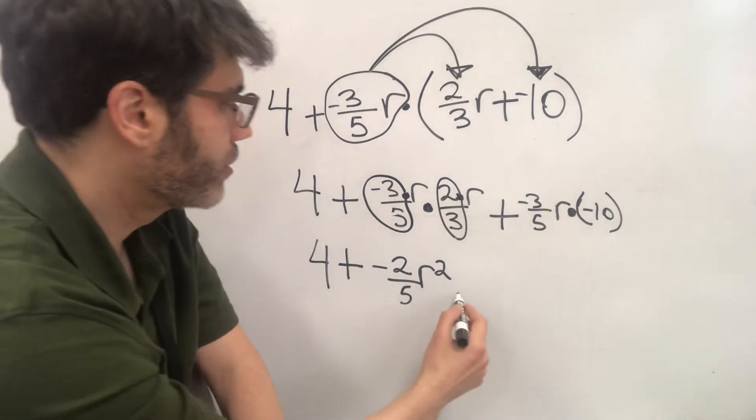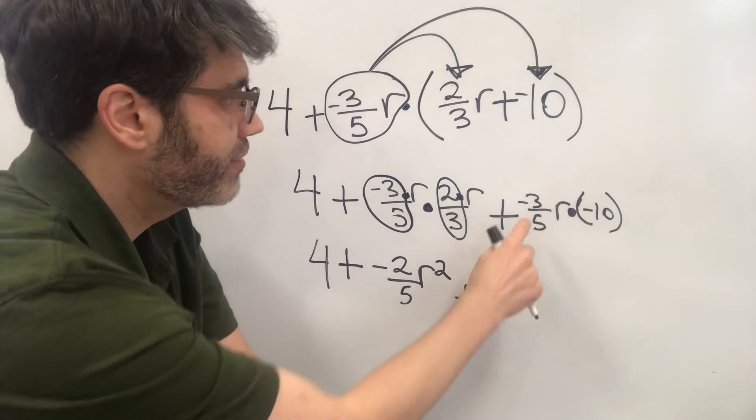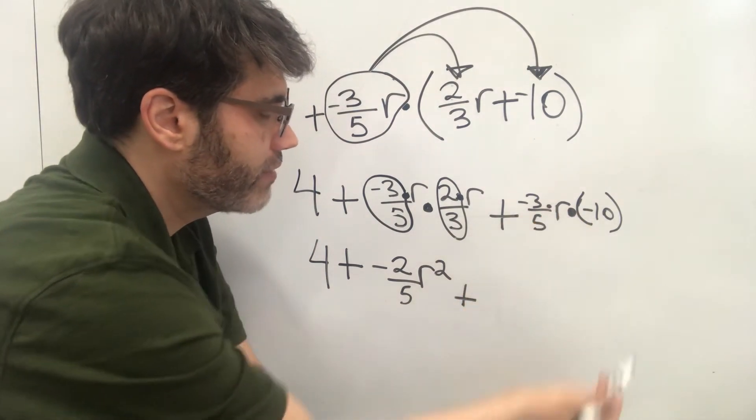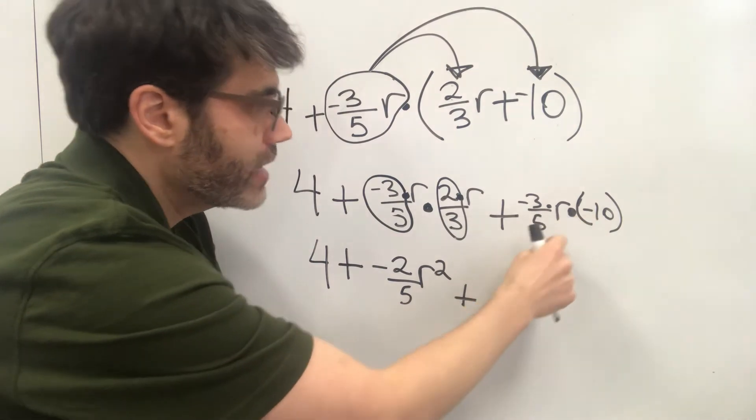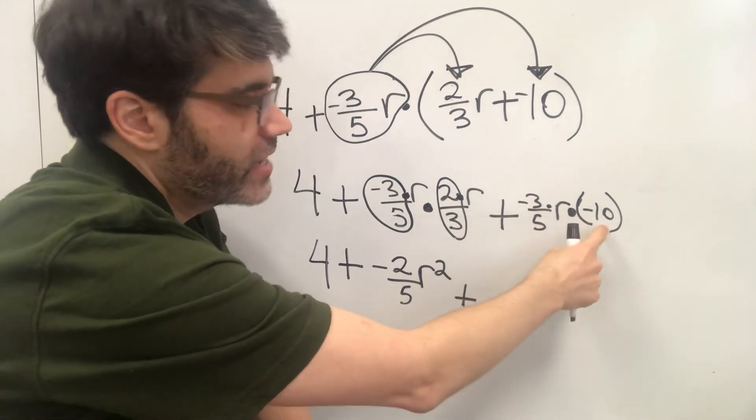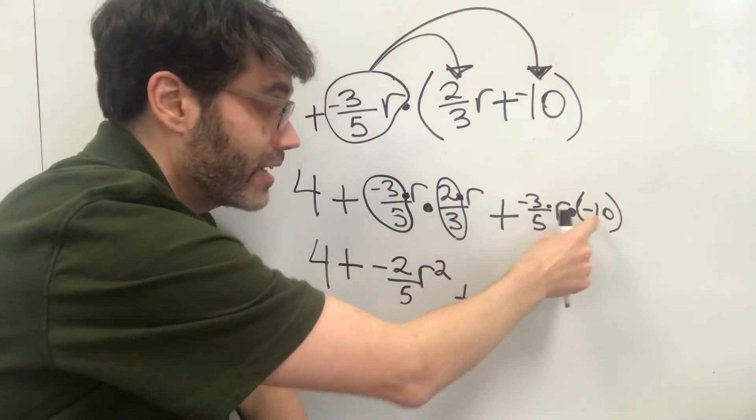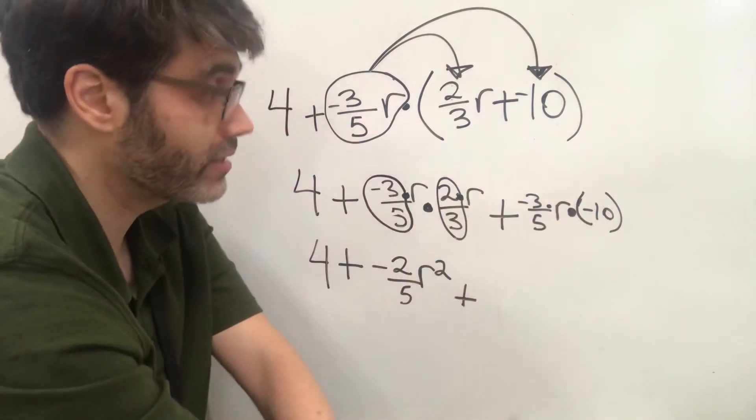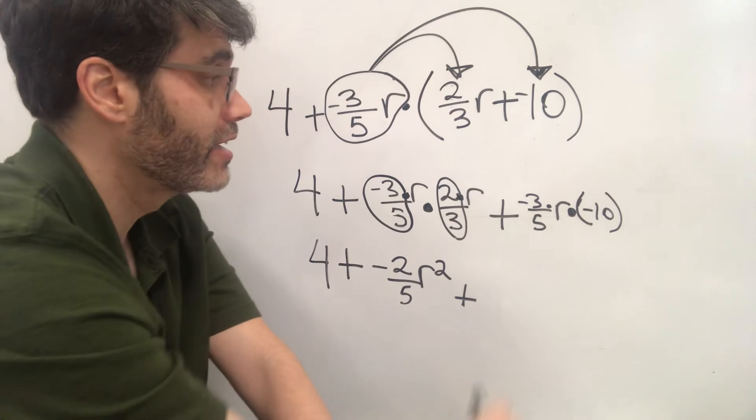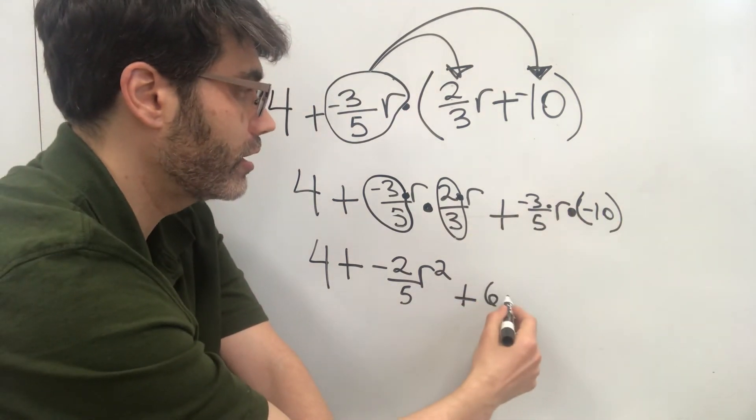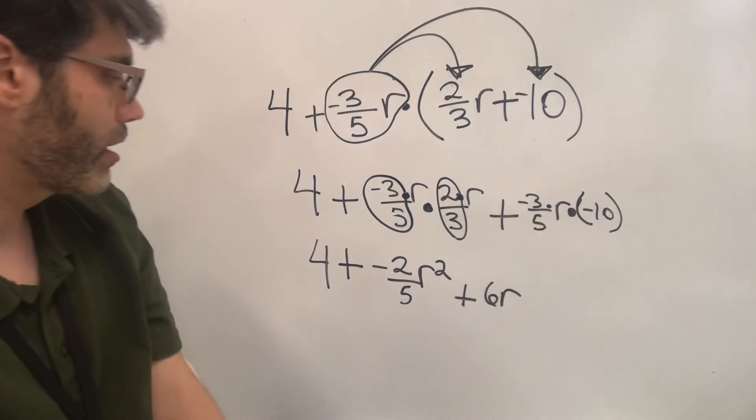And then, over here, we have negative three-fifths times r, if you want to put the little dot in there, fine, times negative ten. So negative three times negative ten is negative thirty. I'm sorry. Positive thirty. Because we have a negative times a negative. So that's a product of positive thirty. And thirty divided by five is six. So we have six r over here.